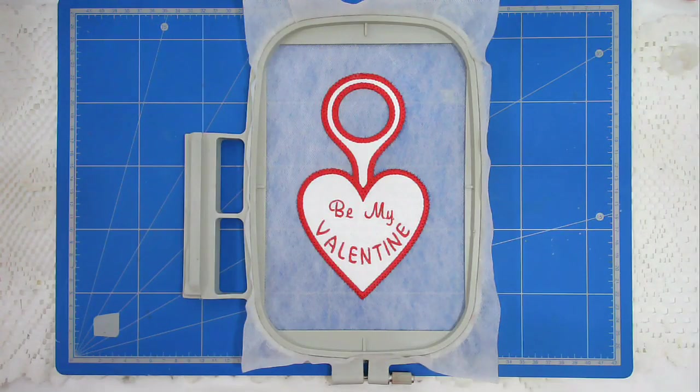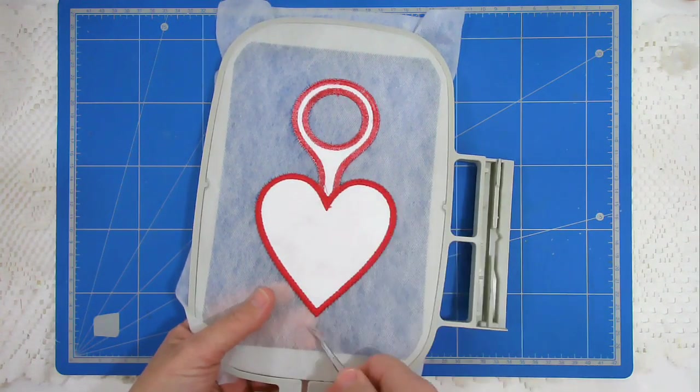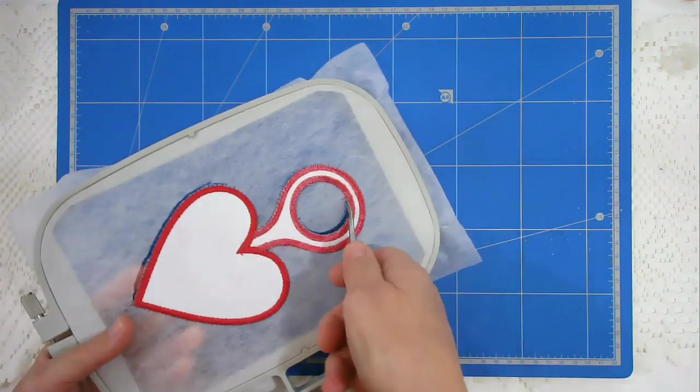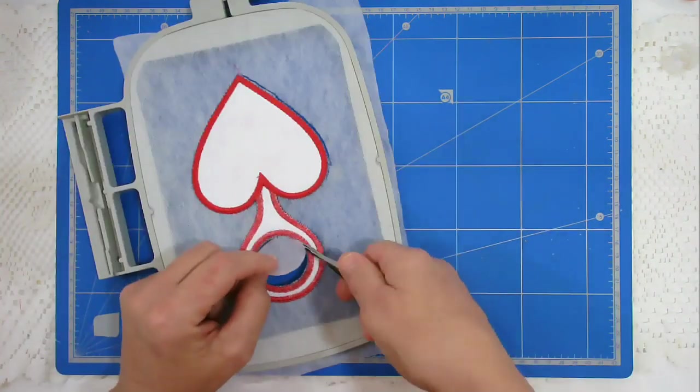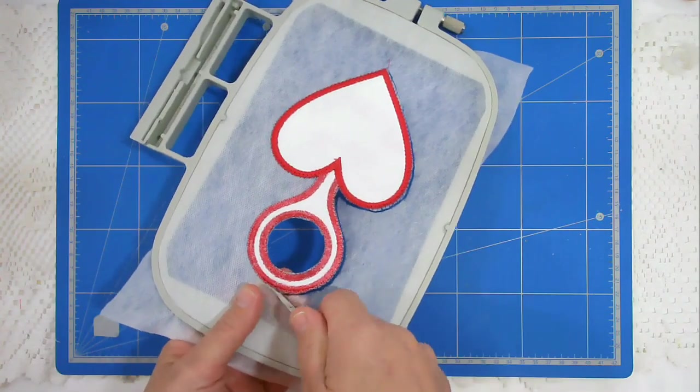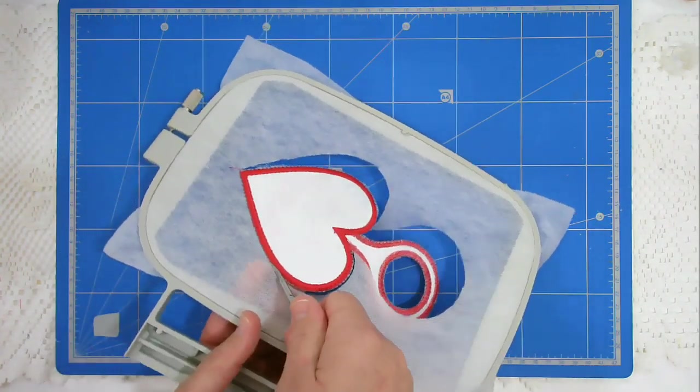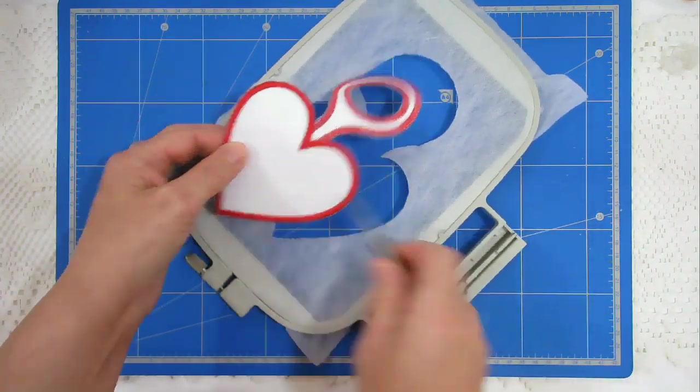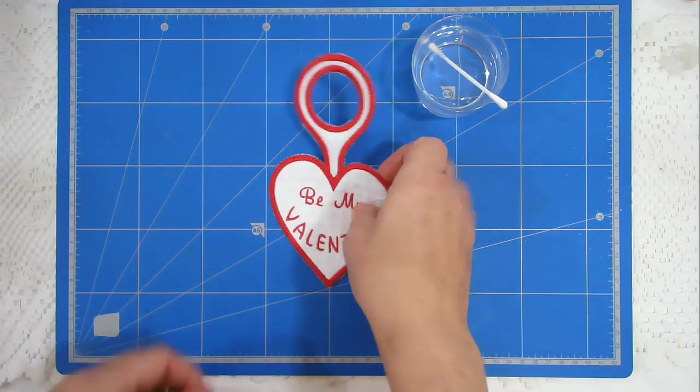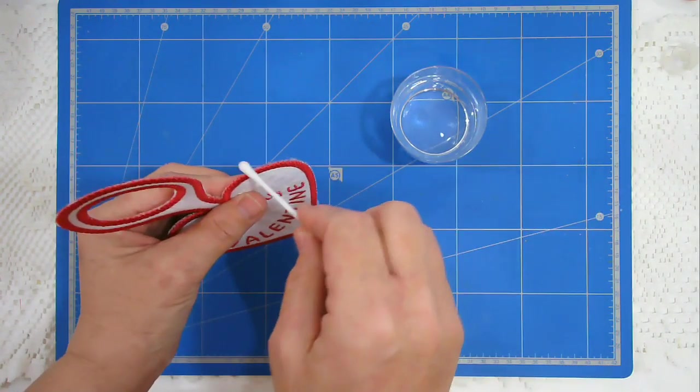Next, I'm going to free it from the hoop. I'm going to turn it over. Now all that remains is to get rid of all the wash away stabilizer that's showing on the edge, so I'm going to use a cotton bud dipped in some warm water for that.